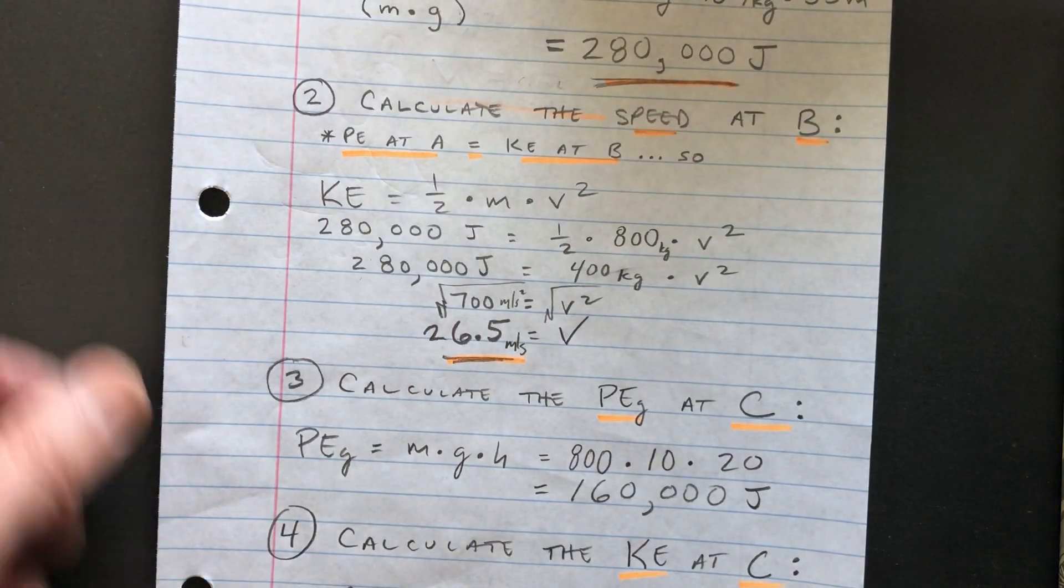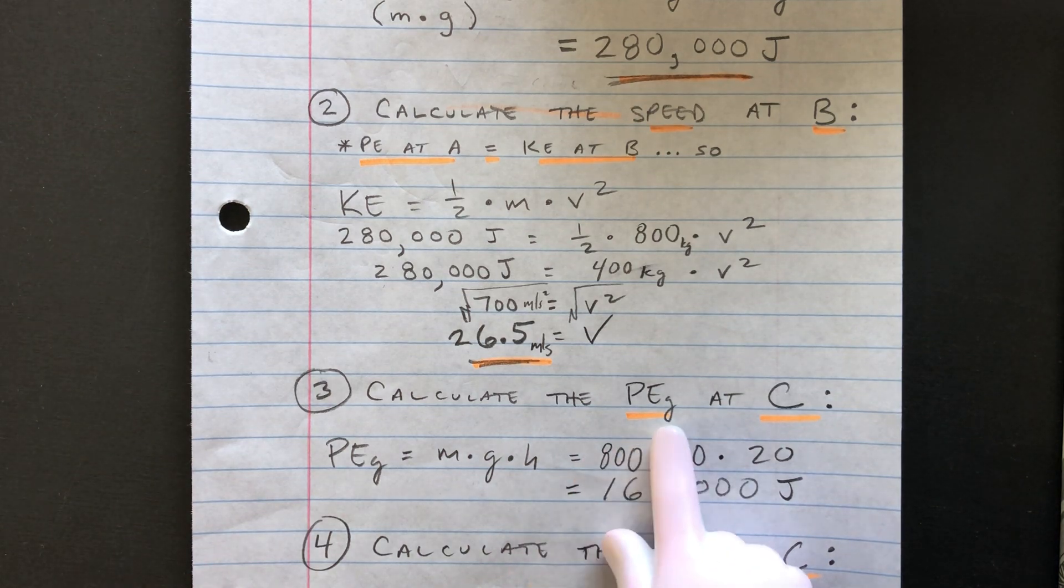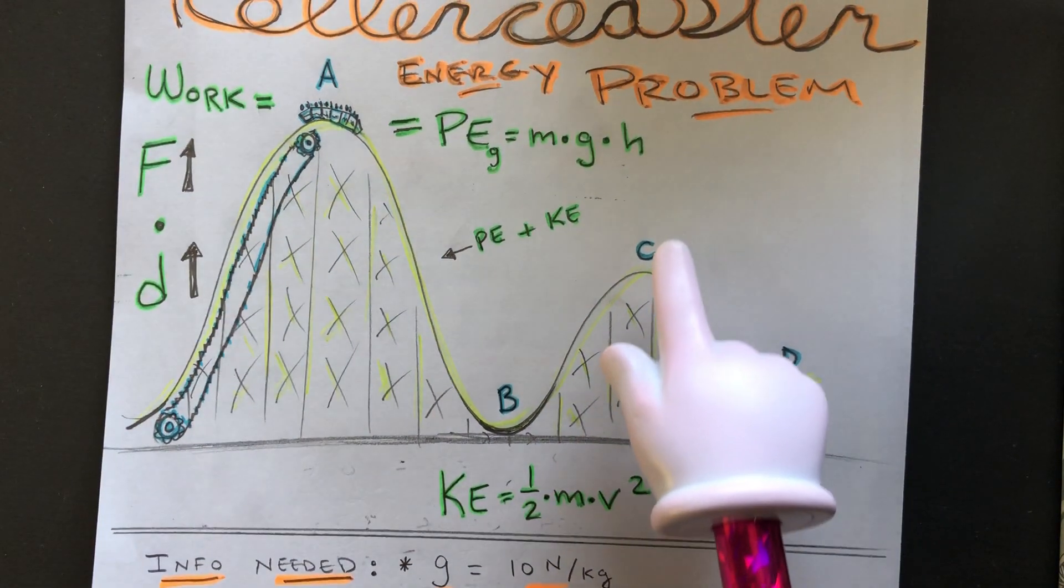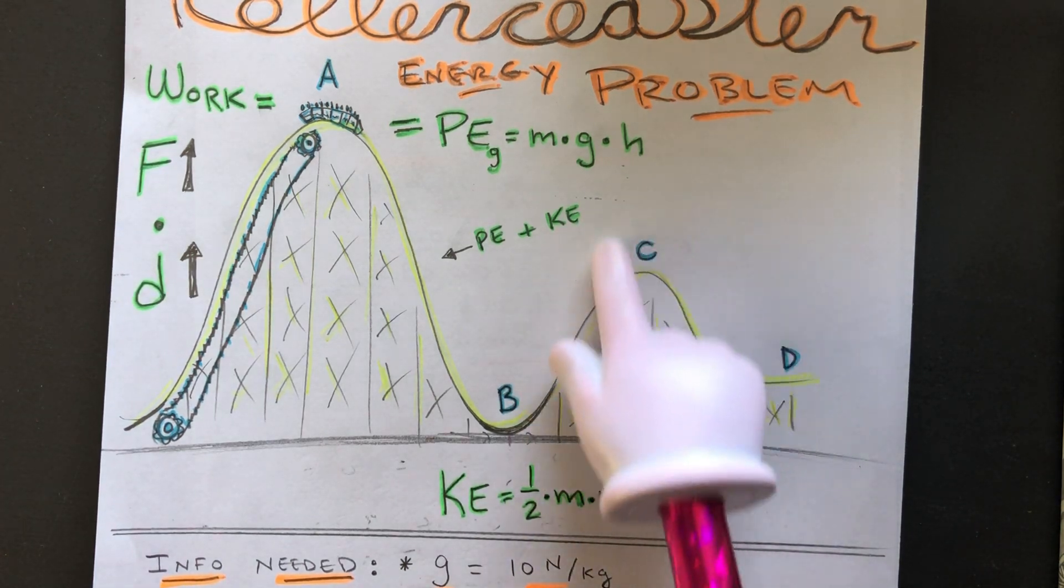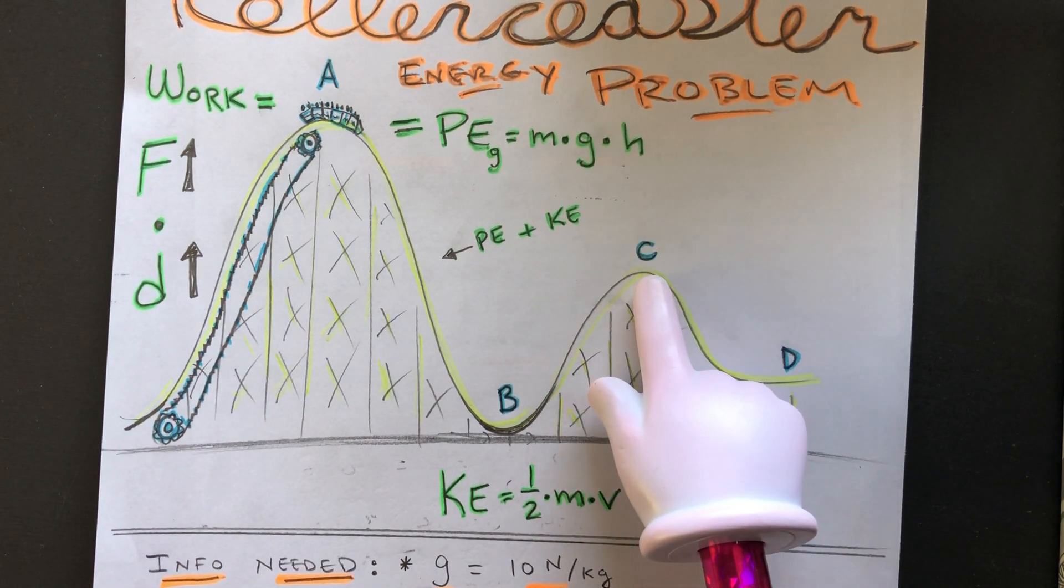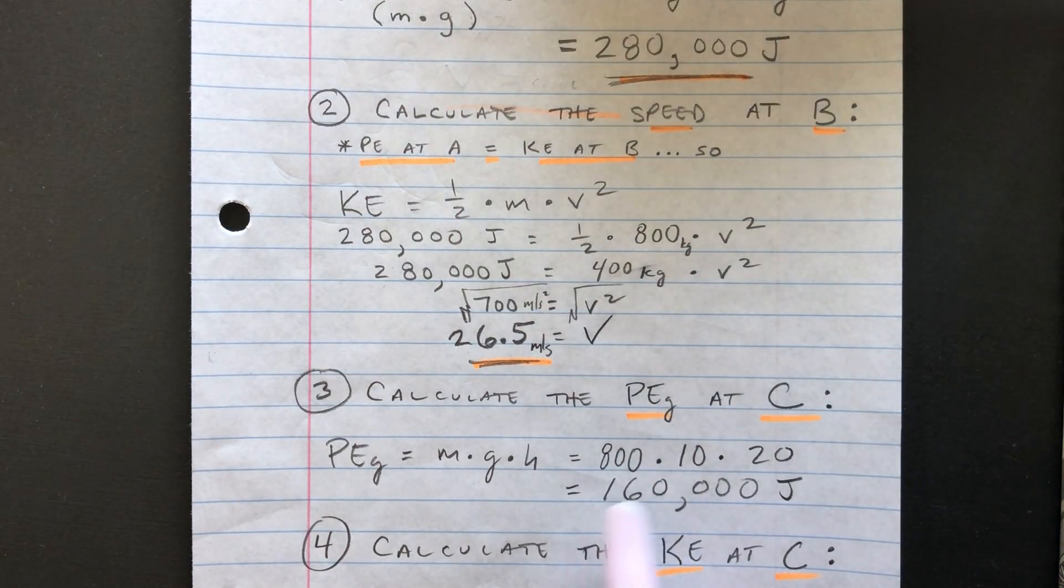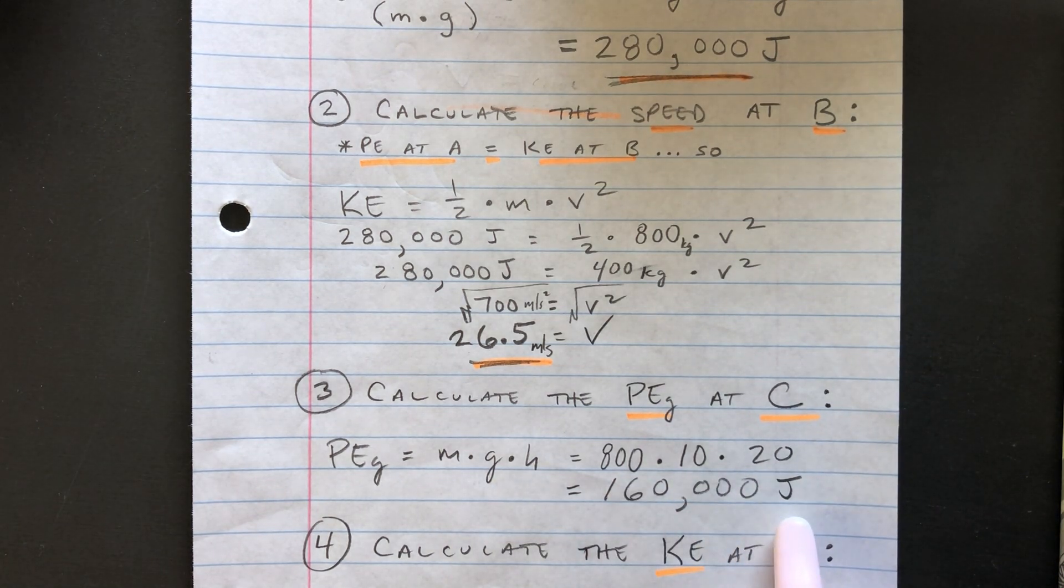What if you wanted to calculate the potential energy at C? That means, let's say you're trying to figure out what the potential energy at C is, and also what the speed at C would be. So again, you want to first calculate what the potential energy is. 800 times 10 times 20. So it'd be 160,000 joules.